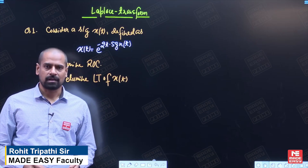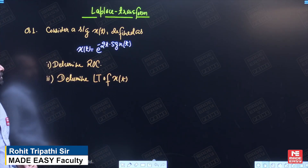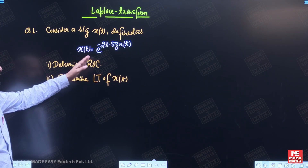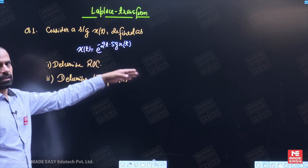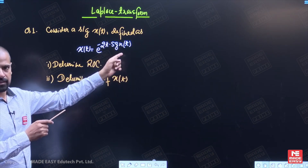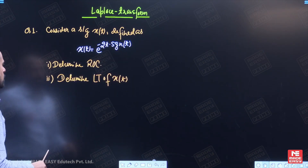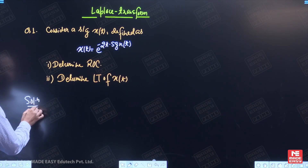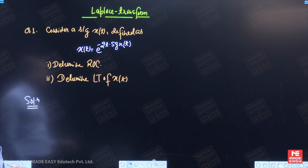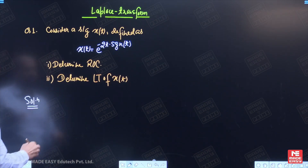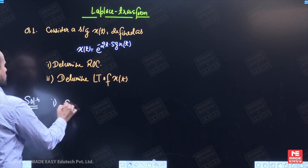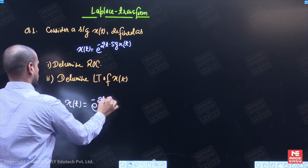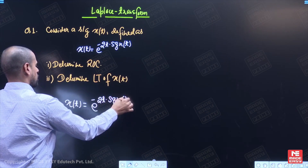Let us start a new chapter: Laplace transform. The first question is: input signal x(t) is given as e to the power minus 2t into signum of t. In the first part, we have to determine the ROC, and in the second part, we have to write down the Laplace transform of signal x(t). So let us proceed for the first part. Signal x(t) is equal to e to the power minus 2t into signum of t.